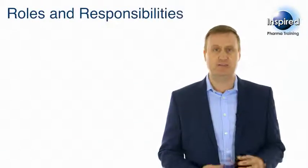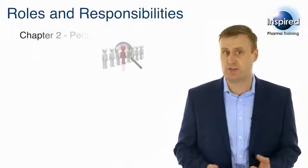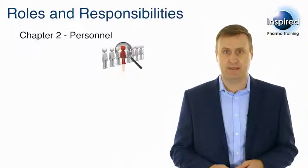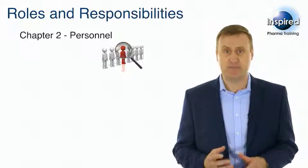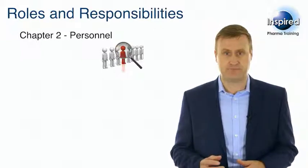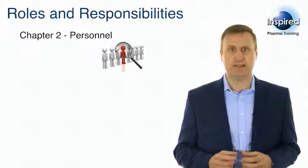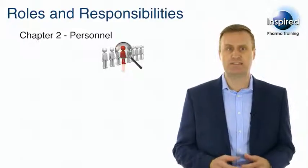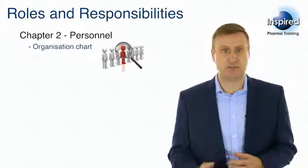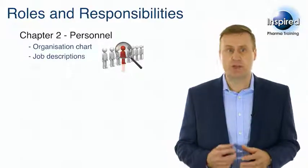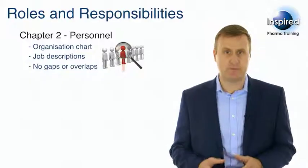The main chapter of EU GMP that covers people is Chapter 2 on Personnel. This is attached at the Attachments section if you would like to refer to it. Within Chapter 2, Clause 2.2, it states that an organisation must have an organisation chart, people must have job descriptions, and there must be no gaps or overlaps in the responsibilities for GMP.